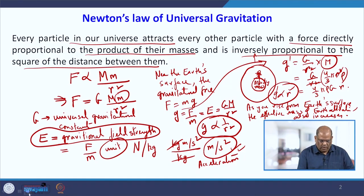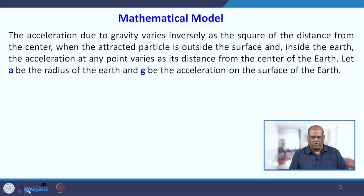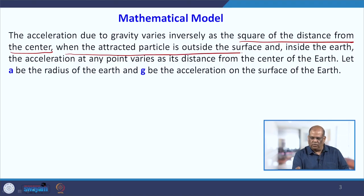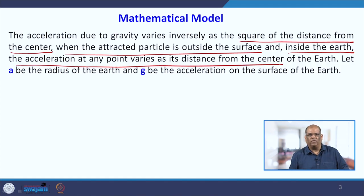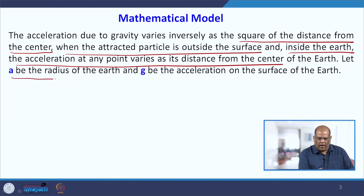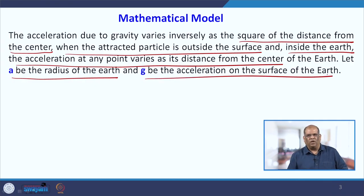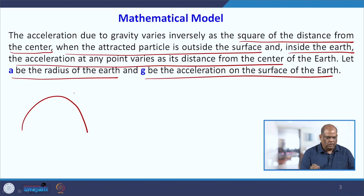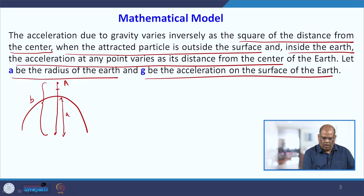With this information, let us take an example. The acceleration due to gravity varies inversely as the square of the distance from the center when the particle is outside the surface, and inside the Earth it varies linearly with distance from the center. Let a be the radius of the Earth and g be the acceleration on the surface. A particle of mass m falls from point A towards the surface of the Earth.